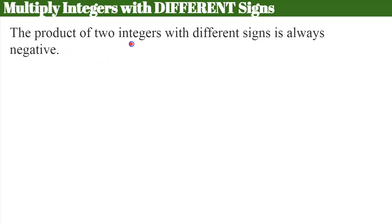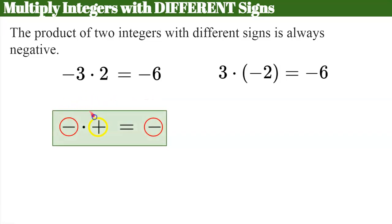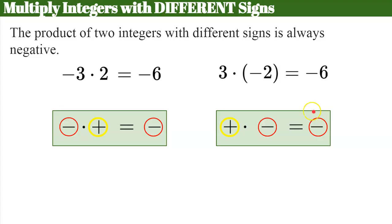Now let's talk about our second rule: multiplying integers with different signs. The rule states that the product of two integers with different signs is always negative. For example, -3 × 2: two different signs, a negative and a positive. Multiply: 3 × 2 = 6, and because they had different signs, the product is negative. Similarly, 3 × -2: different signs, positive and negative — product is negative 6. So remember: same sign → positive; different signs → negative.